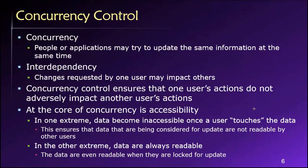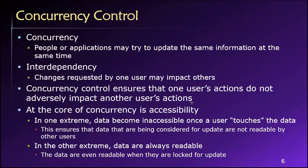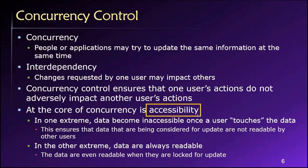One of the interesting concepts related to concurrency control is this notion of accessibility. On one end of the spectrum, if somebody is using some data in the database, we could completely lock down those data so no one else could use, touch, or read them until the first person has finished. That's one extreme along this spectrum of accessibility — the data are not very accessible because we've constrained them to be used by only one person at a time. Others who may need those data are put in a waiting room and just sit there until the first person has finished.